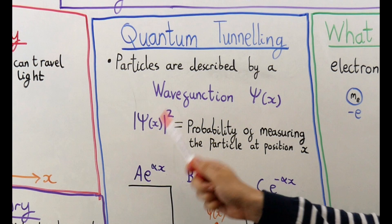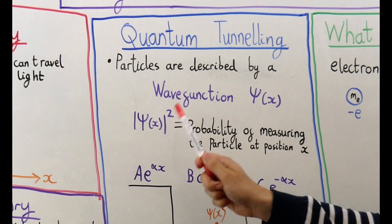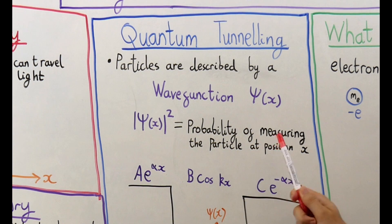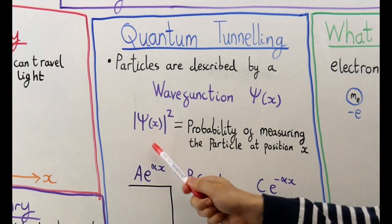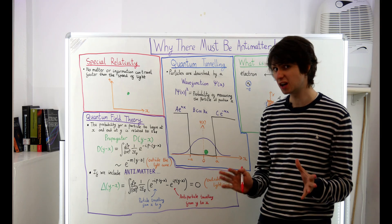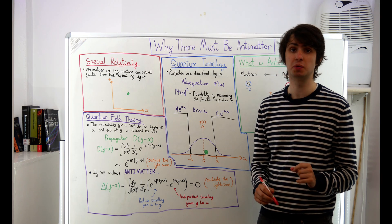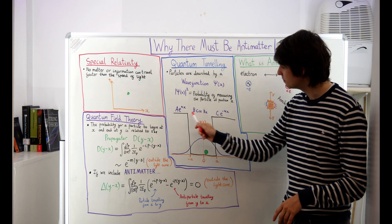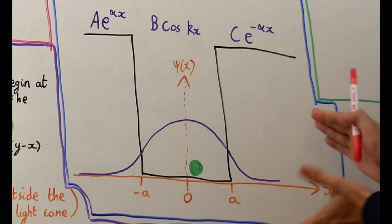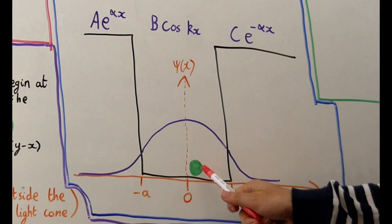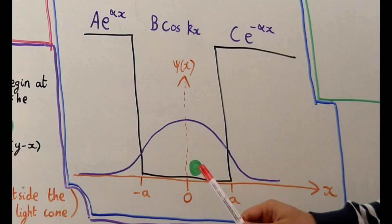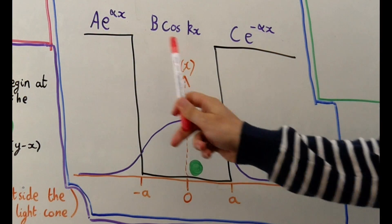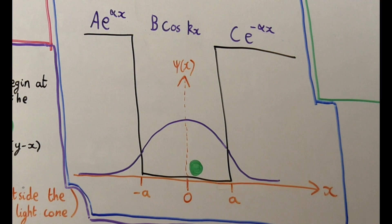Take a wave function, square it, input the position you're interested in and that tells you the probability of measuring the particle at that position x. Simple enough? Well a classic problem in a first course in quantum mechanics is to look at a particle in a potential well. Here is our potential well and this is the particle. The wave function of the particle in this setup looks like this. It takes a different value in each of these three regions.